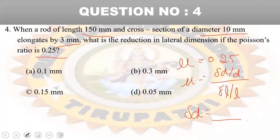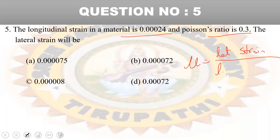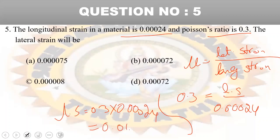From the Poisson's ratio formula, the change in diameter delta d is calculated as 0.05 mm. Next question: longitudinal strain is 0.00024 and Poisson's ratio is 0.3. Lateral strain equals mu multiplied by longitudinal strain, so 0.3 into 0.00024 equals 0.000072. Option D is the right answer.